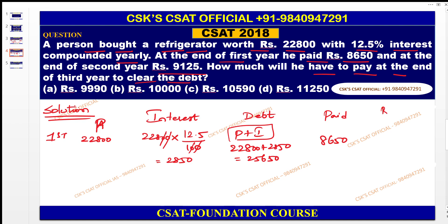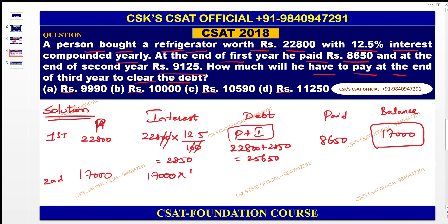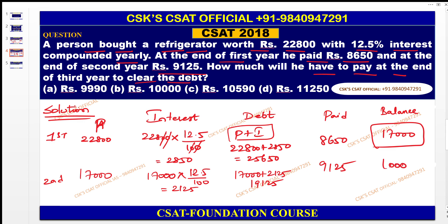The balance after the first year is 25,650 − 8,650 = 17,000. For the second year, the principal is treated as 17,000. The interest is 12.5 percent of 17,000 = 2,125. So total becomes 17,000 + 2,125 = 19,125. He paid 9,125, so the balance is 19,125 − 9,125 = 10,000.